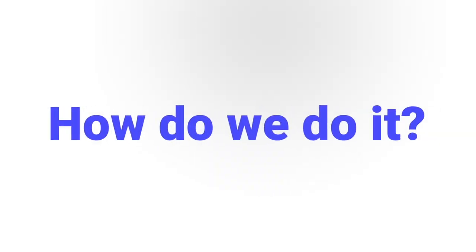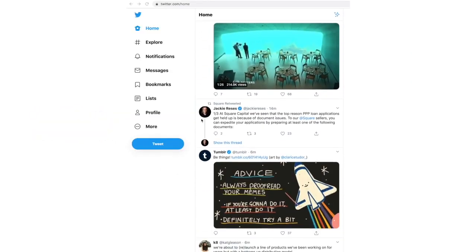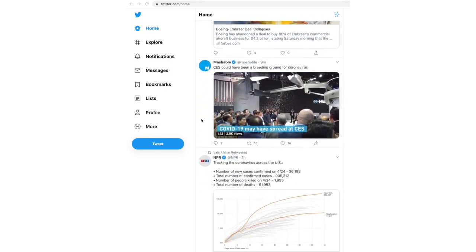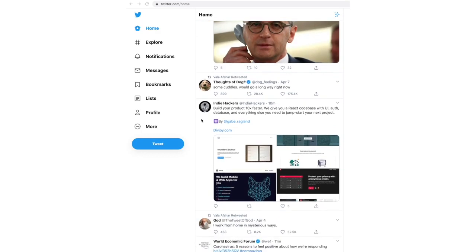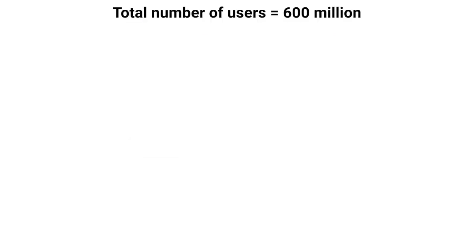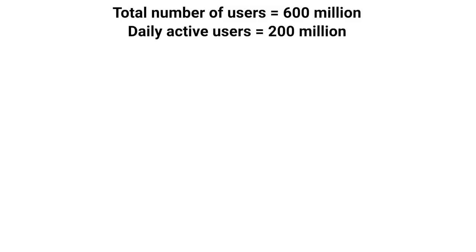Now let's discuss the most important thing: how do we do it. Here we are going to take the example of Twitter to understand it. This is a demo of Twitter — as you can see, I am scrolling through and consuming tweets by other users. Let's assume that for Twitter we have a total number of users of 600 million, and out of that we can assume 200 million daily active users.